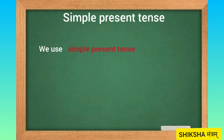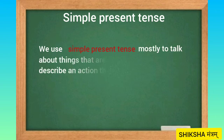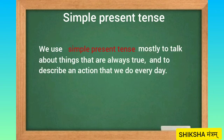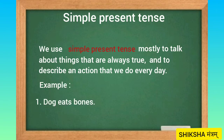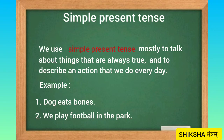We use simple present tense mostly to talk about things that are always true and to describe an action that we do every day. For example: Dog eats bones. We play football in the park.